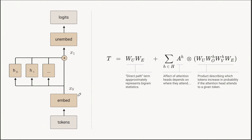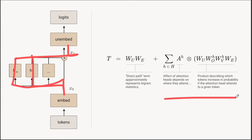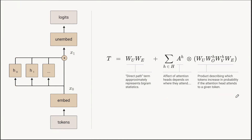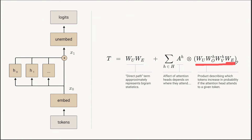For every attention head we have additional terms in the sum, each of which is a tensor product. One part of this describes where the attention heads attend, and the other part describes how attending to a given token affects the logits. This gives us a large portion of the story of what this model's behavior is going to be. What we're still missing is understanding how the attention patterns get created — then we'll have a complete story.